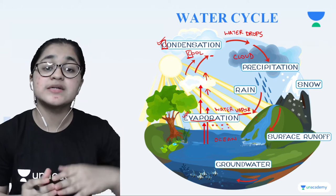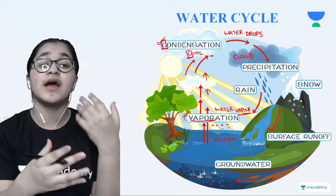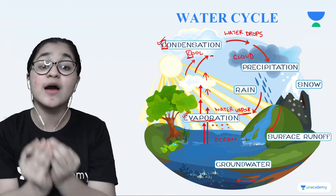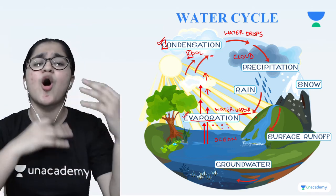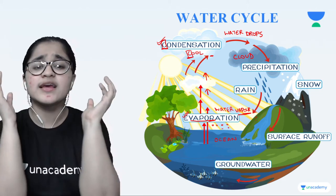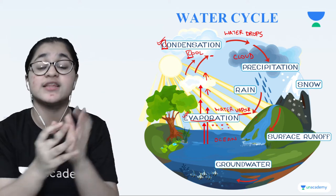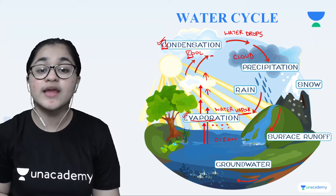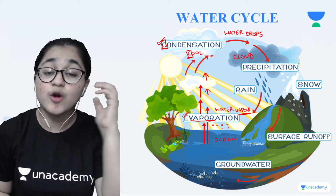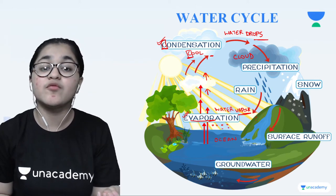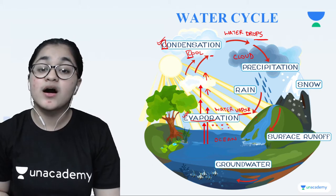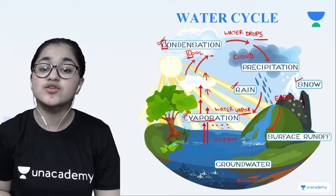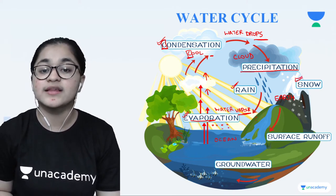When many water vapors rise up and condense, a large group of water droplets forms what we call a cloud. When the cloud becomes very heavy — when it holds more water droplets than it can contain — it bursts. When the cloud bursts, all the water droplets inside come back down to earth, either in the form of rain or snow. This process is called precipitation.